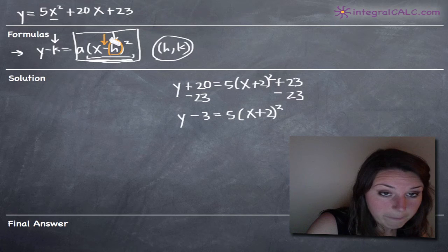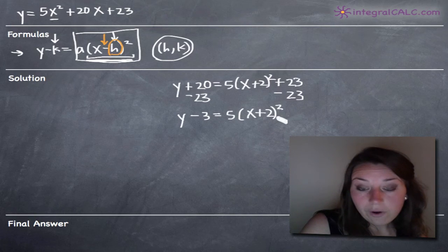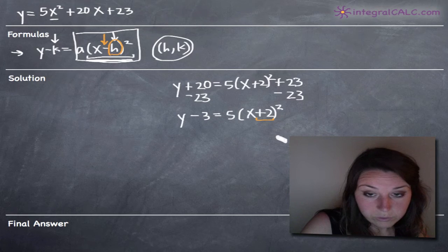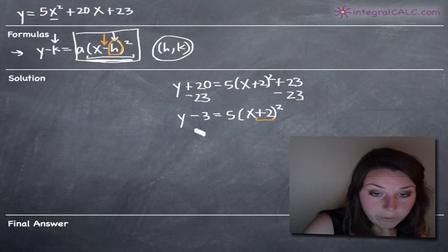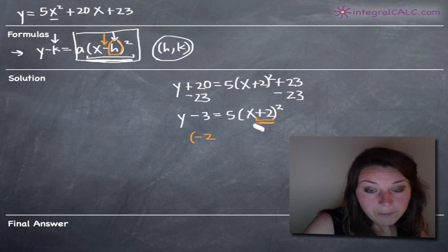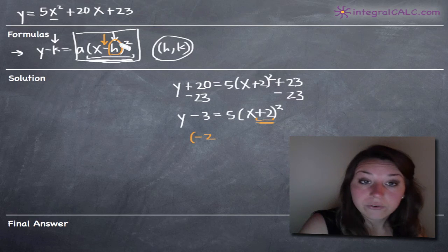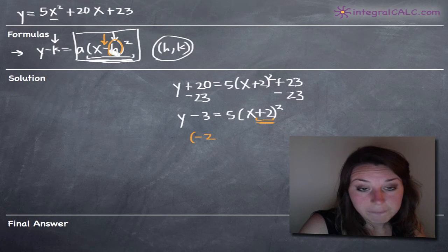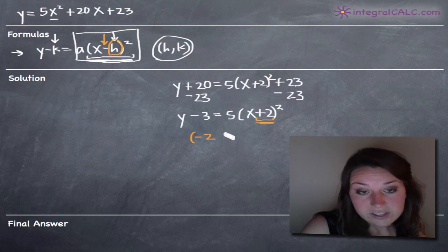Notice also that we have minus h. Well, in our equation, we have plus h, which means that pulling out h is actually going to require us to pull out a negative 2 instead of a positive 2. If we just pulled out positive 2, that wouldn't match our formula, which has this negative sign. So we have to say that h is negative 2.